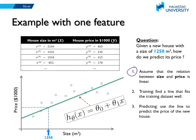We can assume that the relation between the size and the price is linear. This can be true or false, but let's make this assumption. Training means that we want to find a line that fits the training data in a good way. The equation of this line looks like this. X here is the size of the house. Theta 1 and theta 0 are parameters that we need to find. Once we find this line, we can use it to make predictions — for example, if we have a new house which has this size, we can predict that its price is this one.